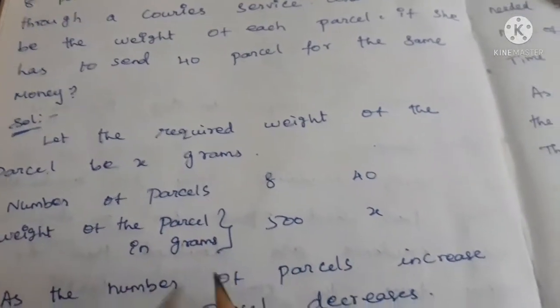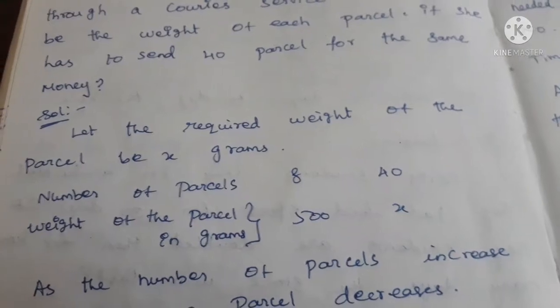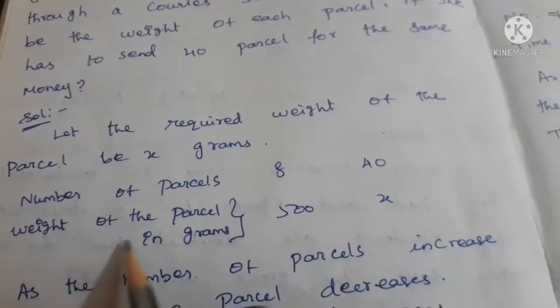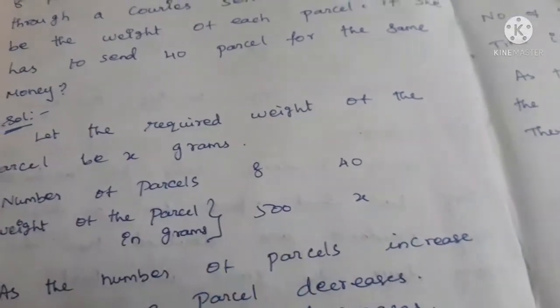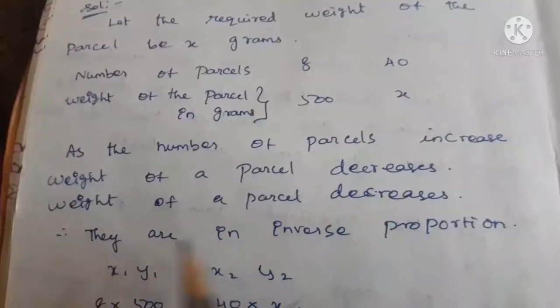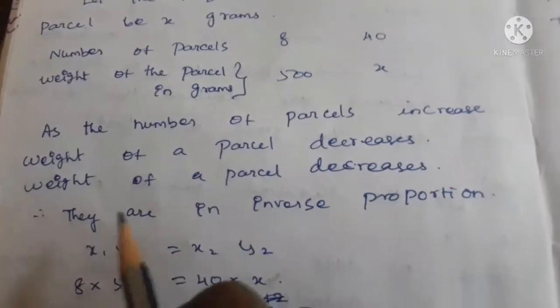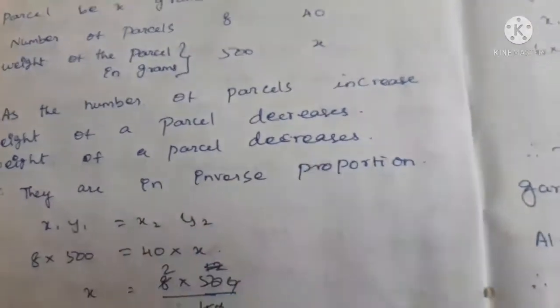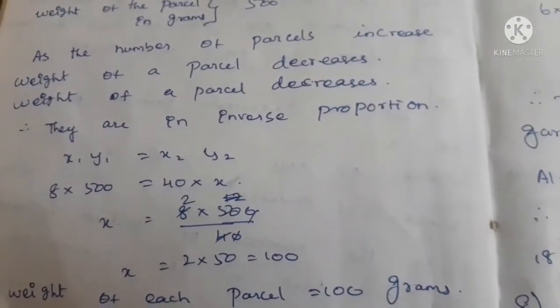Number of parcels is 8, each weighing 500 grams. As the number of parcels increases, the weight of each parcel decreases. So weight of parcel decreases; they are in inverse proportion.